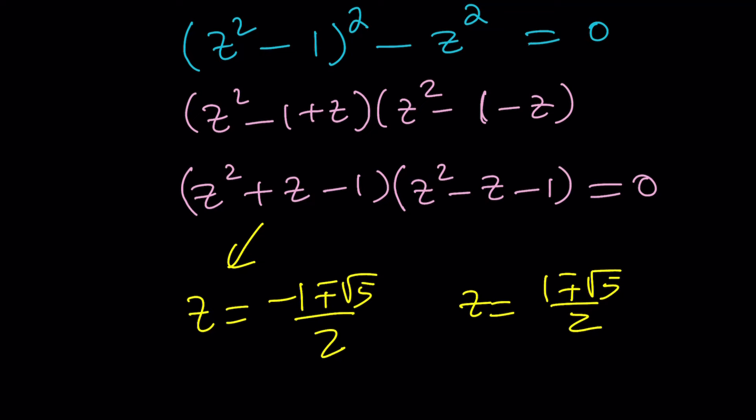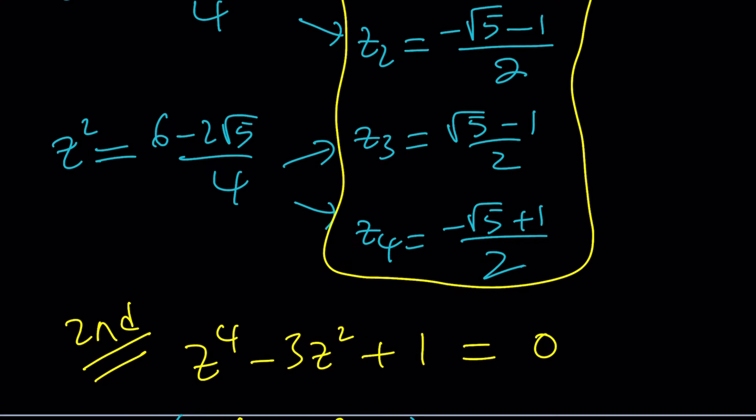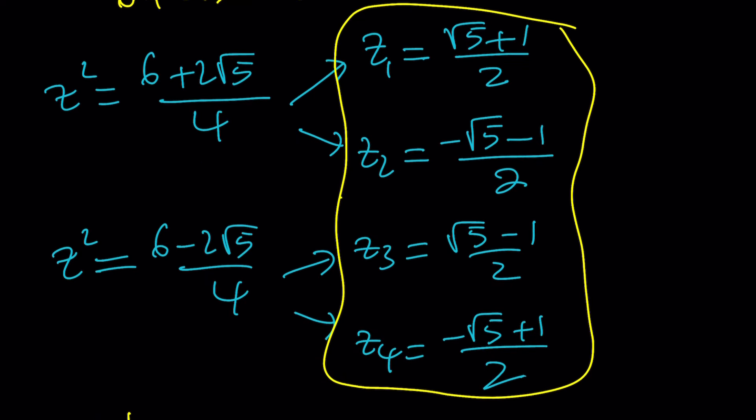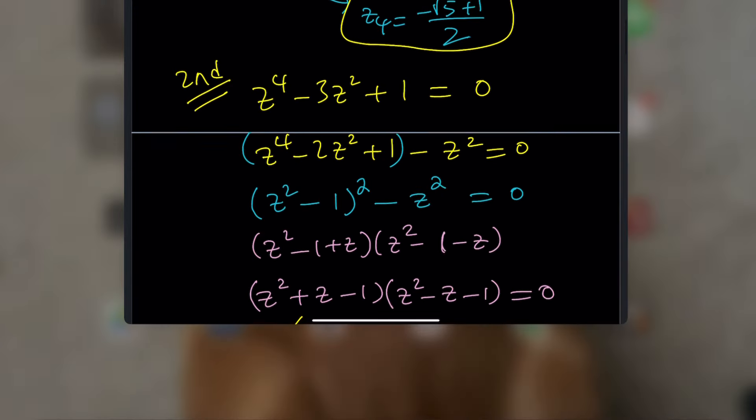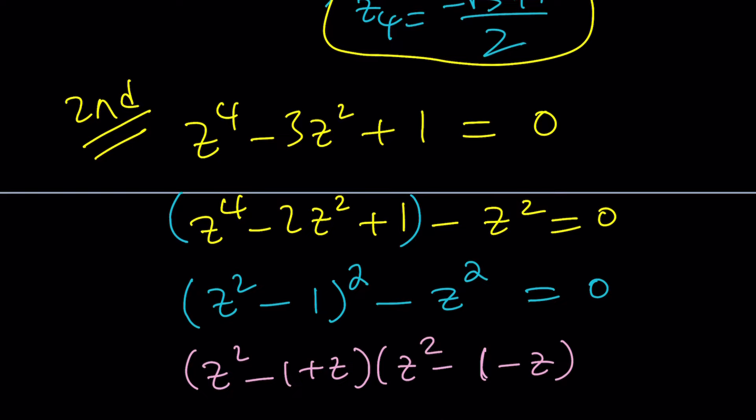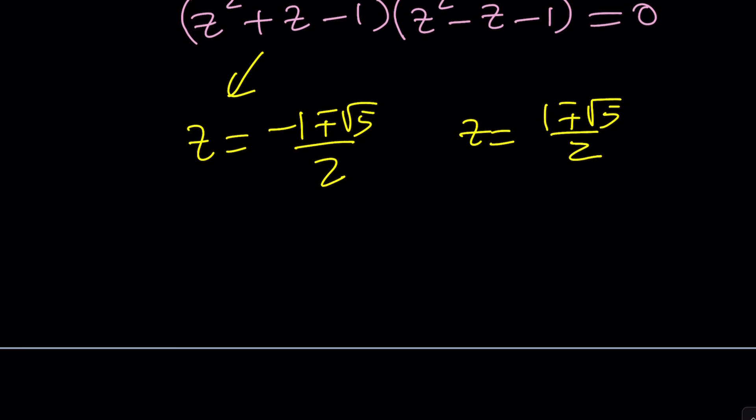The difference between the first and the second method is that we pair up the solutions differently. Here the solutions, if you think about the two separate paths that we took from z squared, the solutions in each group are opposites because they're both equal when they're squared. But here the numbers are conjugates.